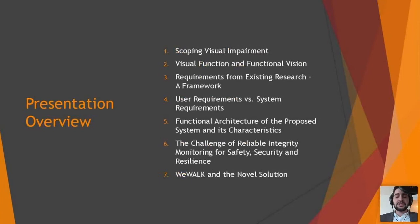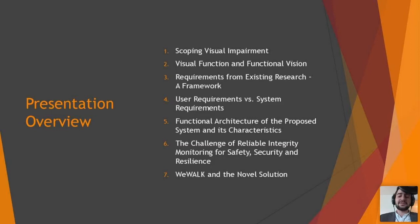In today's presentation, we're really going to start from the basics: what is visual impairment, what is the scope of visual impairment, and what's the difference between visual function and functional vision? We then dive into the requirements and look at the scale and the frameworks we apply to make sure that the systems we design are actually fit for purpose.